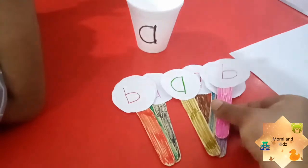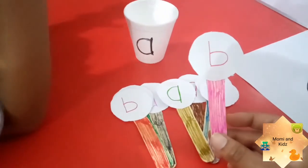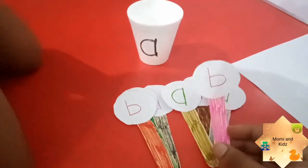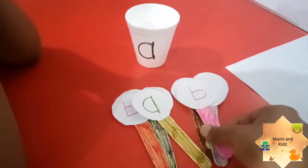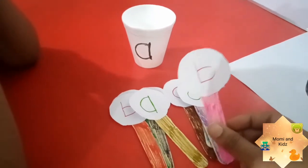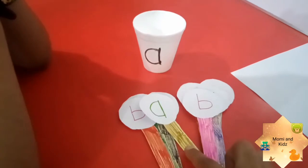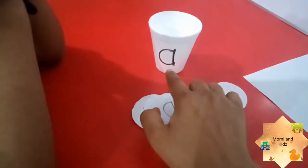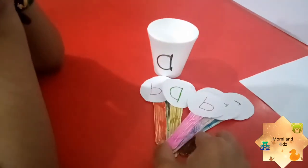Also I have taken some of the colored popsicles and I pasted some of the papers in which there are sounds written like A. And in some of the papers I have written sound B. So your kid has to match these popsicles with the sound A in the cup. So let's go and do this activity. It is a very good sound sorting activity.